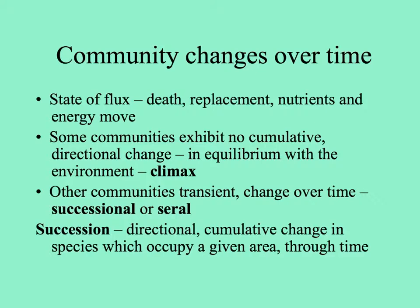Other communities are transient — they're only there for a certain amount of time, changing on their way to something else. These are called successional communities, or seral communities. The different stages of succession are sometimes referred to as seres. We can define succession as a directional, cumulative change in species which occupy a given area through time.